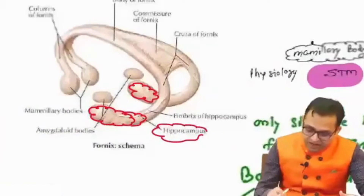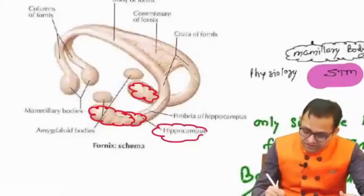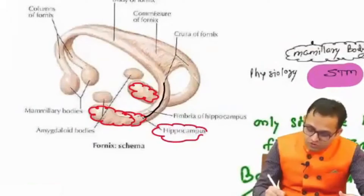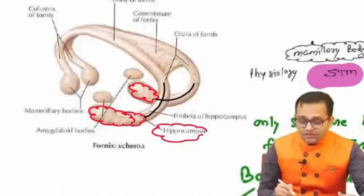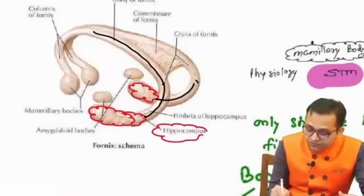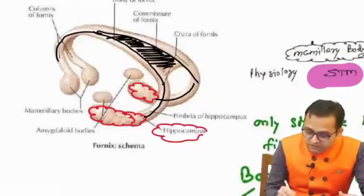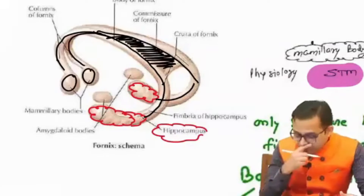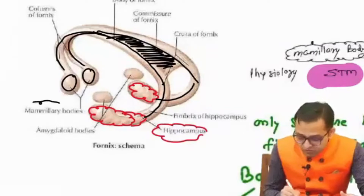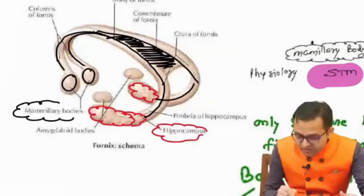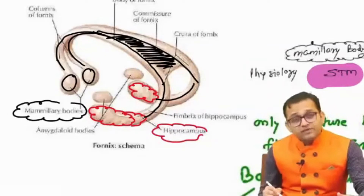This hippocampus is carrying the impulse to our posterior column. This posterior column is going forward, and they are fusing together making the body. Now it is dividing into the anterior column and entering into the mammillary bodies.